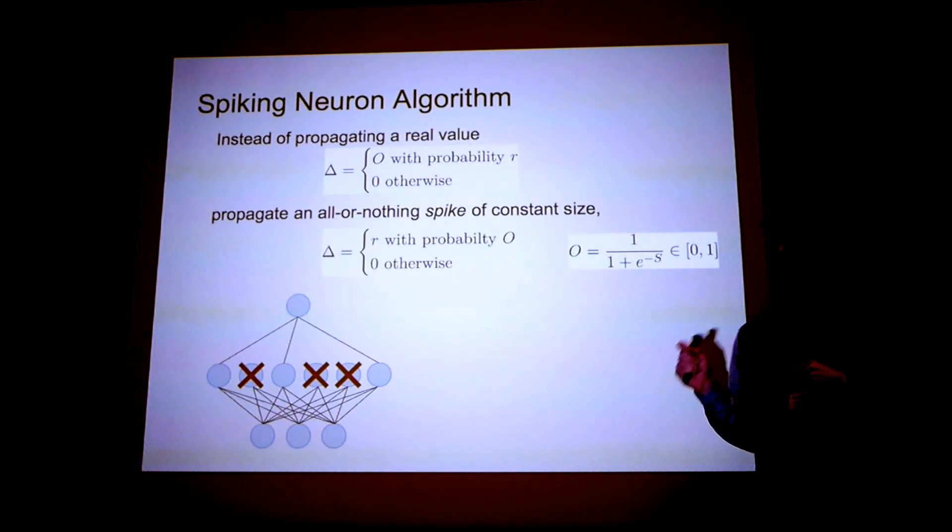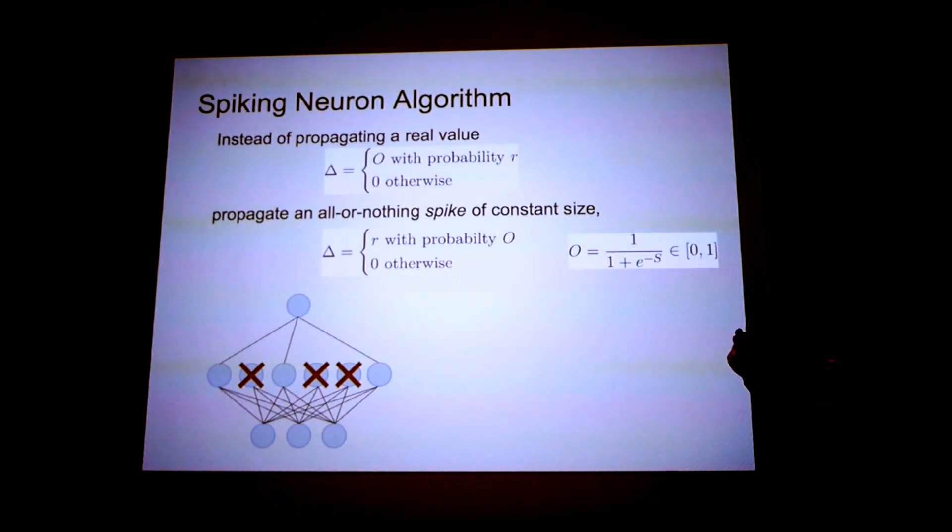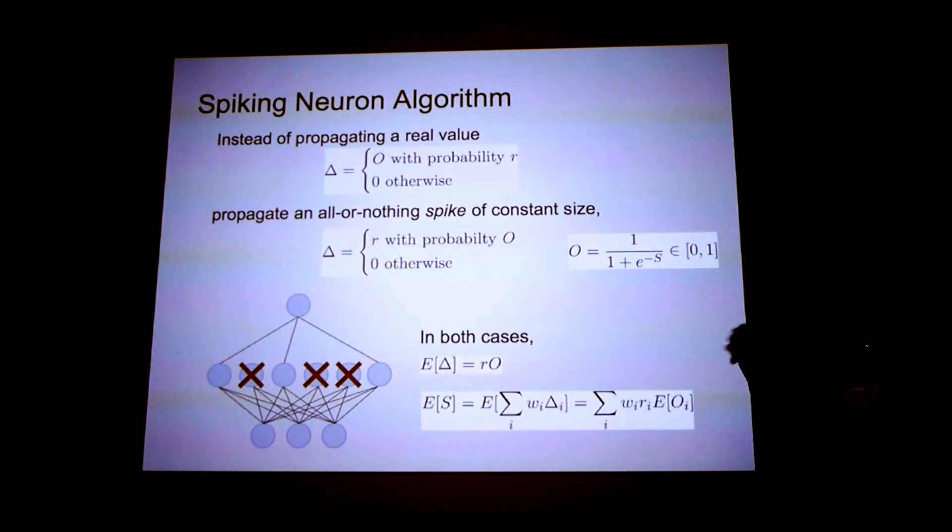So remember O is the activation or the output of the sigmoid function. You can see that in both cases, dropout and the spiking neuron algorithm, the expectation of the output of each neuron is the same. The variances will be different, but the expectation will be the same.